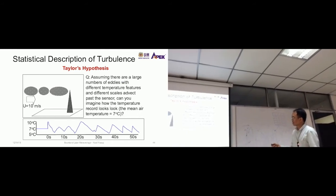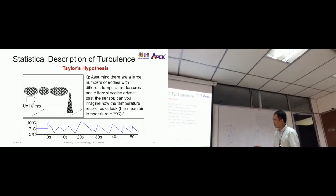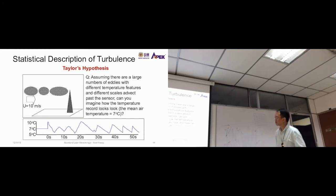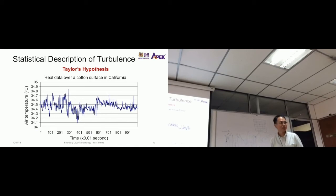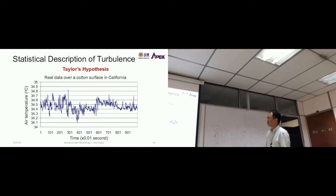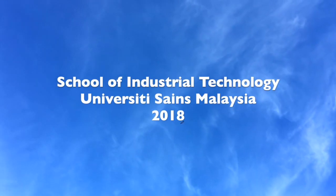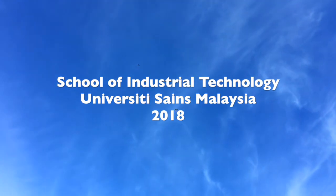So assuming there are a large number of eddies with different temperature features and different scales that pass the sensor, can you imagine how the temperature record looks like? Something like that - something that you see when you measure temperature in the air. It's made of many types of eddies. The previous slide was just one eddy, so it's just one increase and decrease. This is the actual temperature reading. Have you seen this also in Weather Underground? Those variations are caused by the different types of eddies.